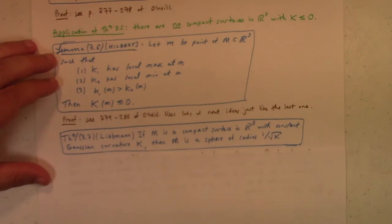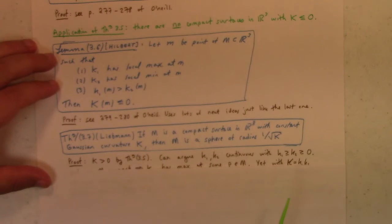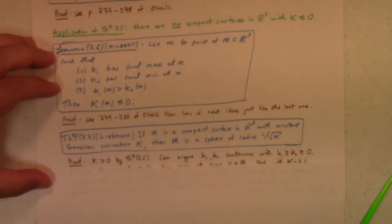I promise the next lecture will be more detailed. Theorem 3.7 by Liebman. If m is a compact surface in R3 with constant Gaussian curvature k, then m is part of a sphere of radius 1 over the square root of k. Okay. Here's a sketch of the proof. All right. So, if the Gaussian curvature is positive by theorem 3.5. Well, excuse me. The Gaussian curvature is positive by theorem 3.5. In other words, it's a compact surface with constant Gaussian curvature. So if it's positive at one point, it's positive at all points. Excuse me. Let me drink my tea.